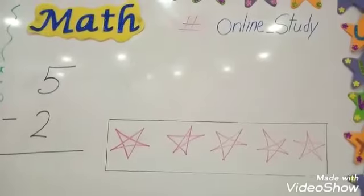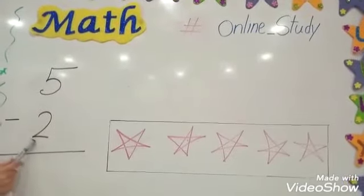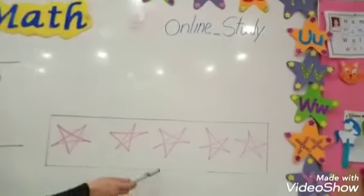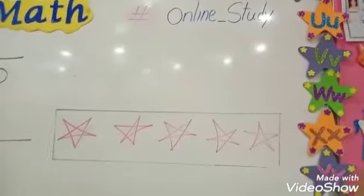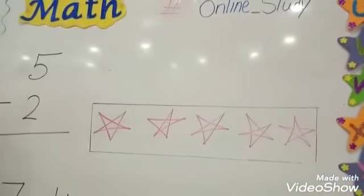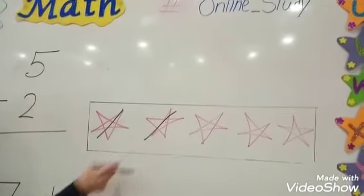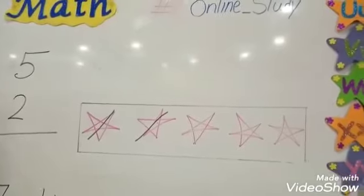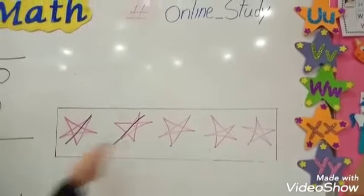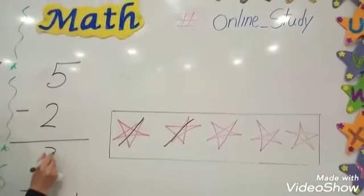Let's make a revision on subtraction. Let's read. 5 minus 2 equal. We will have here 5 stars. How many stars we will cross out? Very good. We will cross out 2 stars. How many stars are left? Let's count. 1, 2, 3. 5 minus 2 equal 3.